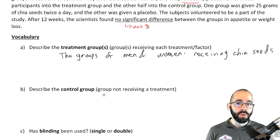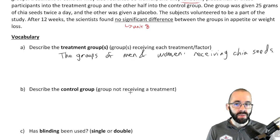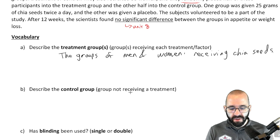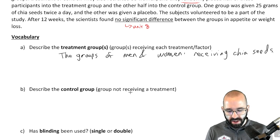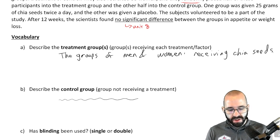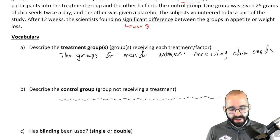The control group is the group not receiving the treatment. That will be the groups of men and women receiving the placebo.